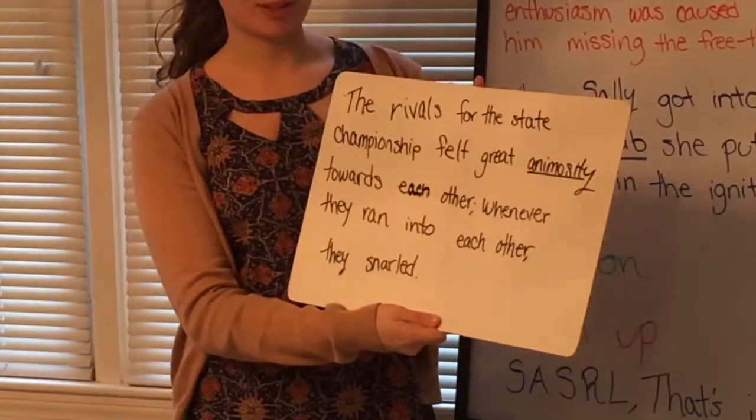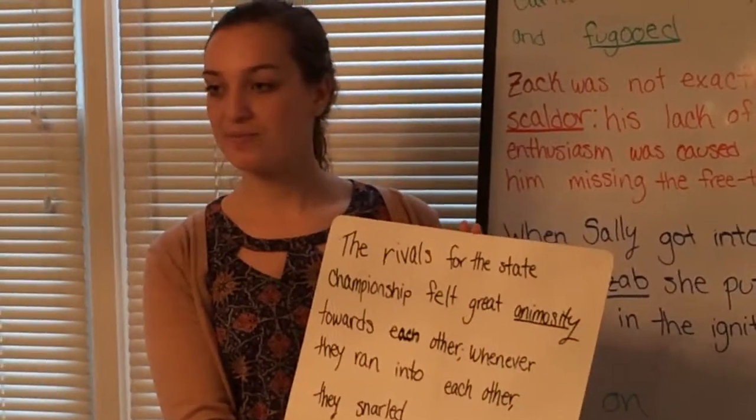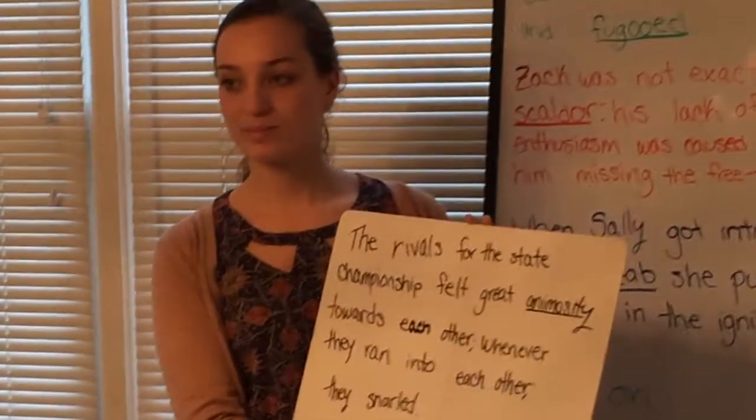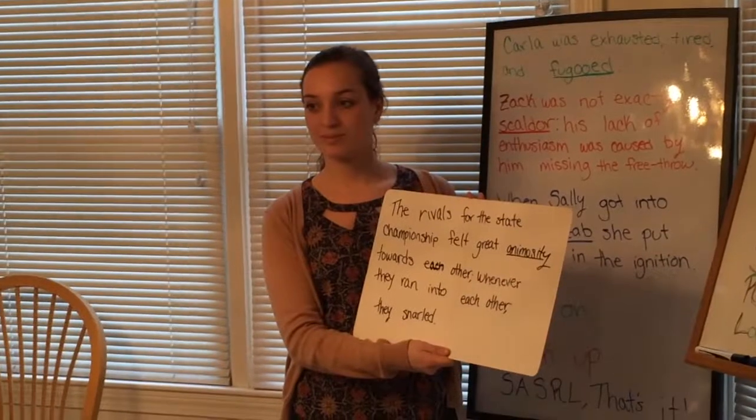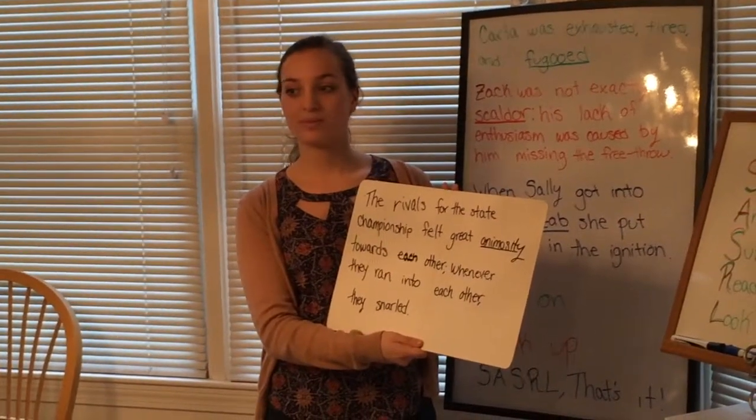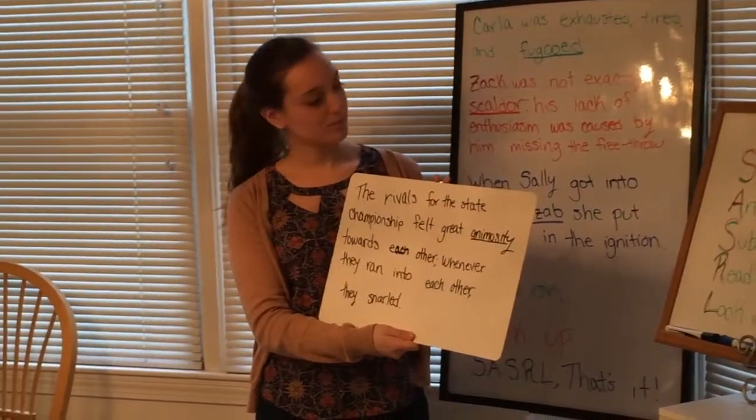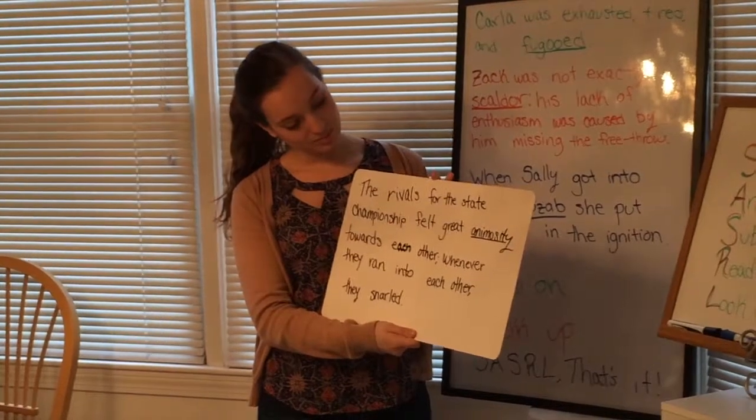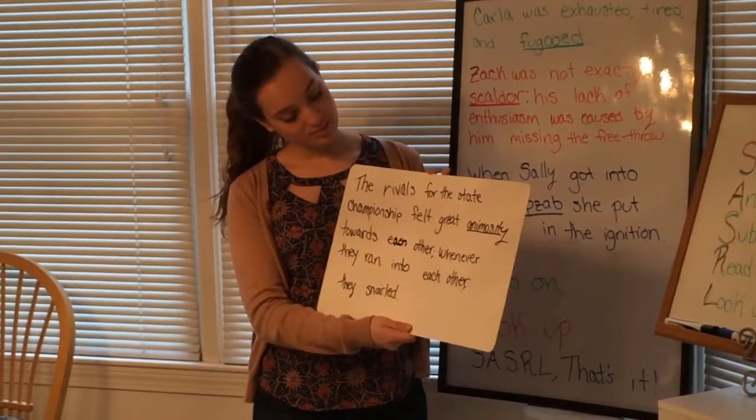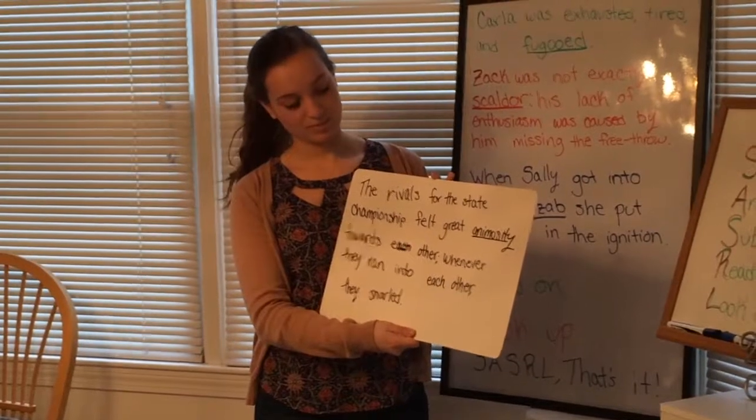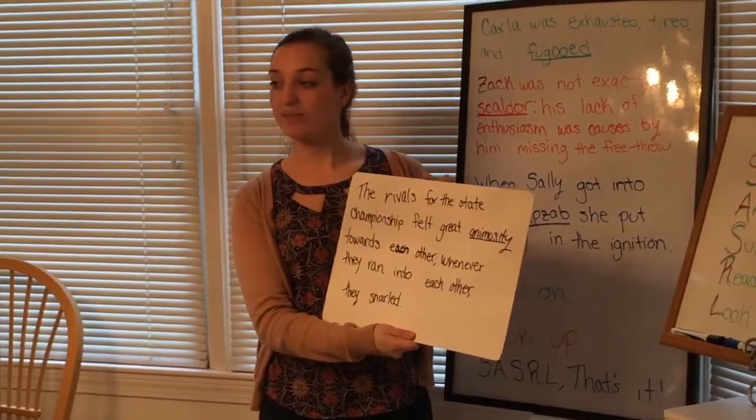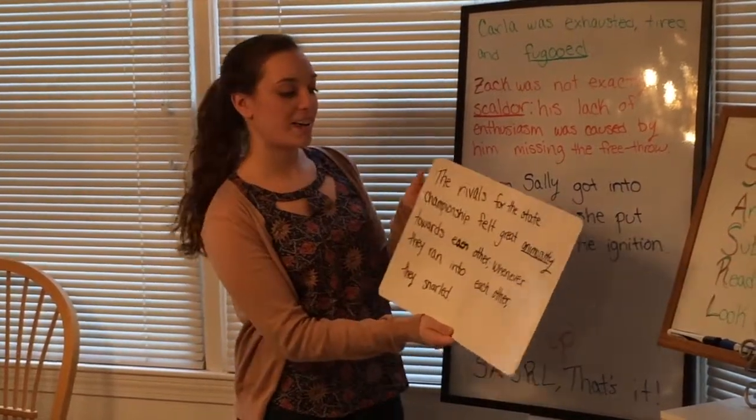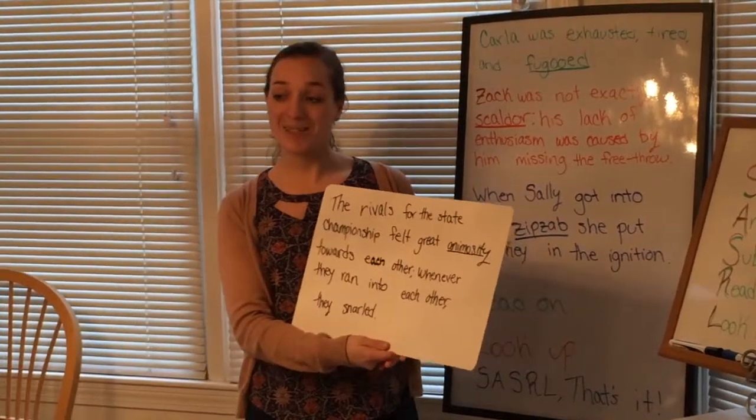Okay. Julia, how would we use our context clues to figure out animosity? So you would look at the words around animosity and try to find if there are any synonyms or antonyms. So because you know that they are rivals and that when they ran into each other they snarled, animosity probably means some sort of discomfort or dislike. Yeah. Dislike, you think? Well, that is exactly right. Animosity does mean dislike.